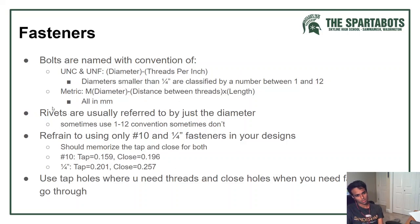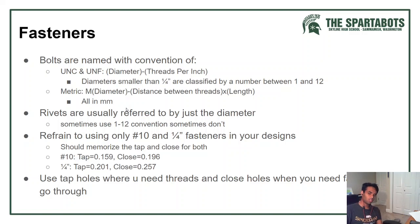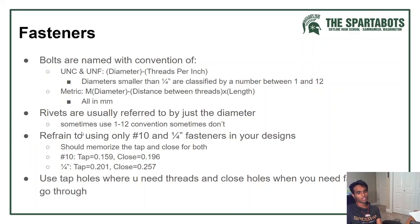Rivets are usually just measured by diameter, so you'd say you want a 3/16 rivet. There is also a length aspect to them depending on how thick the material you're riveting is. Sometimes they use the 1-to-12 convention for US rivets and sometimes they don't.